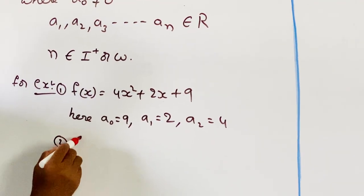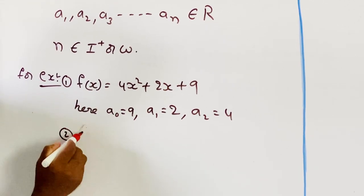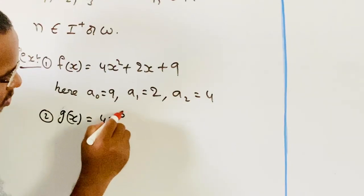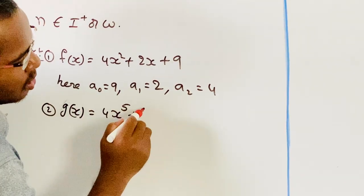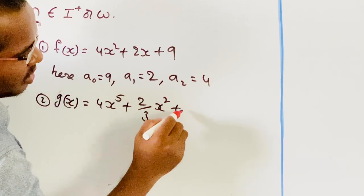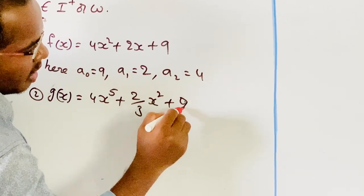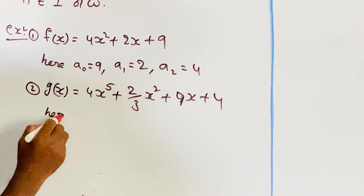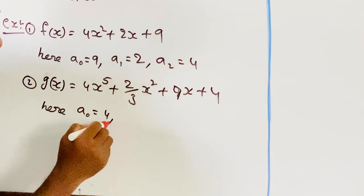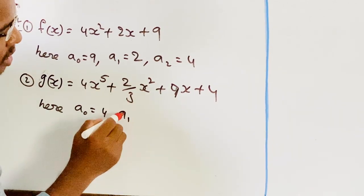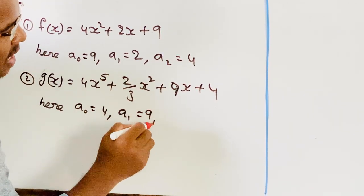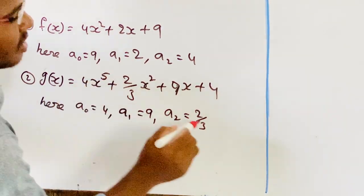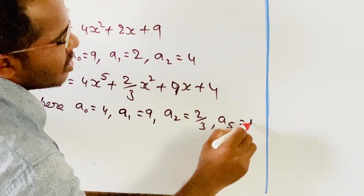And the second example: g of x is equal to 4x to the power 5 plus (2/3)x squared plus 9x plus 4. Here, a0 is equal to 4, a1 is equal to 9, a2 is equal to 2/3, and a5 is 4.